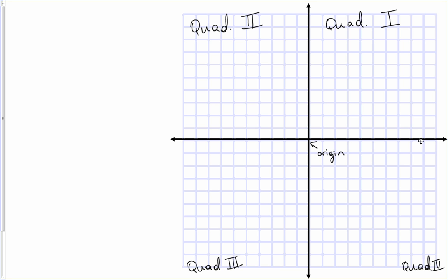This is your x-axis, and the one that goes vertical is your y-axis.